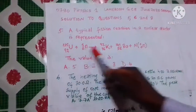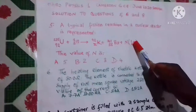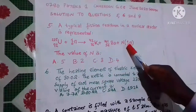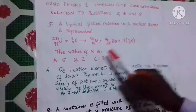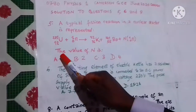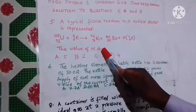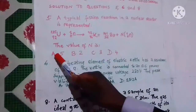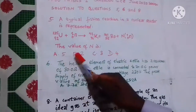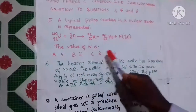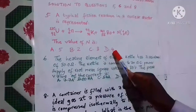This is the fission reaction. The value of n is: A) 5, B) 2, C) 3, and D) 4.